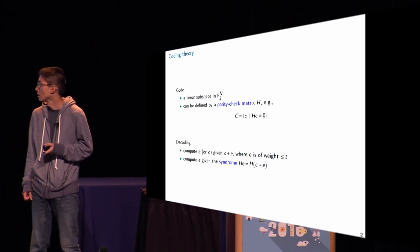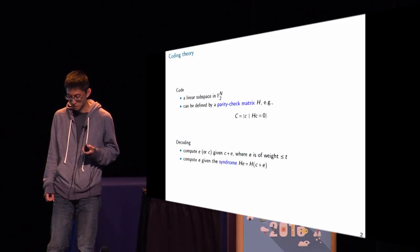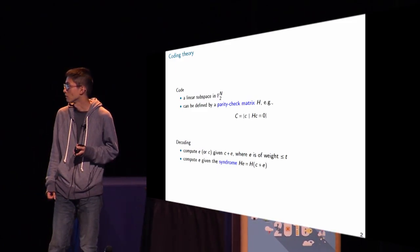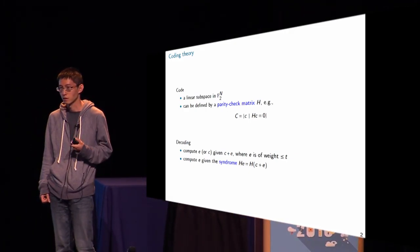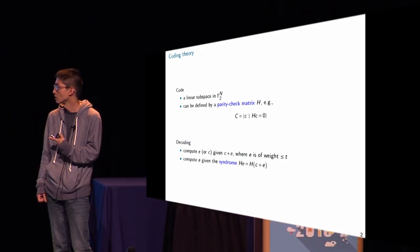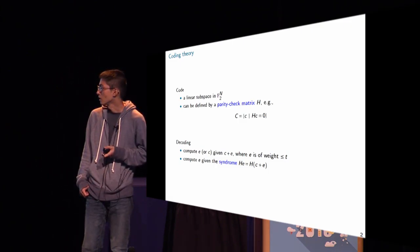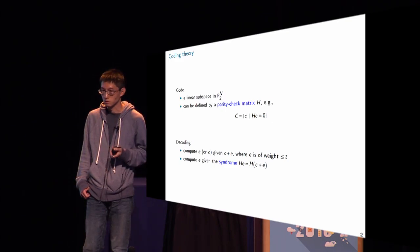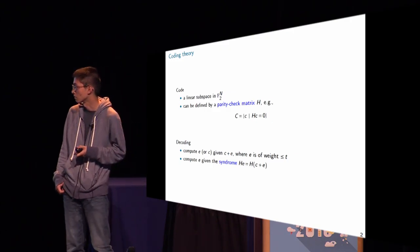And since it's a linear subspace, you can, of course, define it using the kernel space of a matrix. And in this case, we call the matrix parity check matrix, usually denoted by H. And one thing important in coding theory is that we want to do error correction, want to do decoding. So let me define it first.